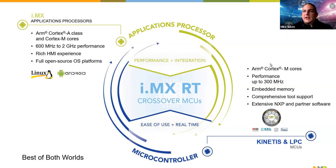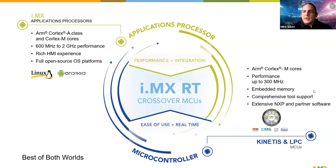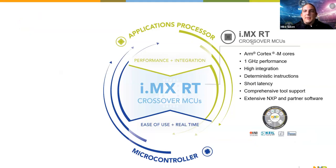On the other side is the MCU portfolio, running on Cortex-M — mainly M0, M1, M3, M33, and M4 — with performance up to 300 MHz. It has embedded memory, and we provide tools for flashing and debugging, making it easy to get started. Now let's talk about the i.MX RT family — our crossovers.